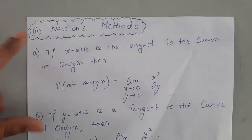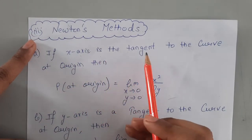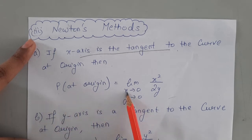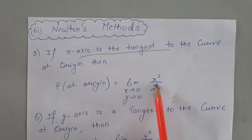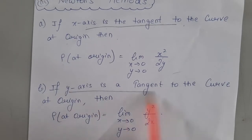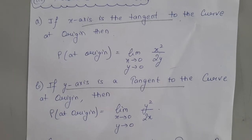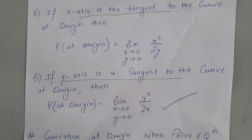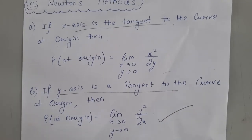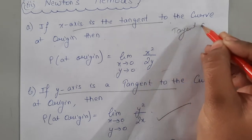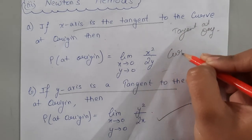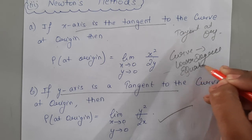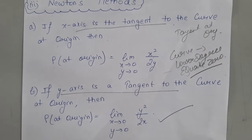Next comes Newton's method. If the x-axis is the tangent to the curve at the origin, then the radius of curvature = limit as x→0, y→0 of x²/2y. If the y-axis is the tangent, then radius of curvature = limit as x→0, y→0 of y²/2x. To find the tangent at the origin, equate the lowest degree term of the curve's equation to zero.